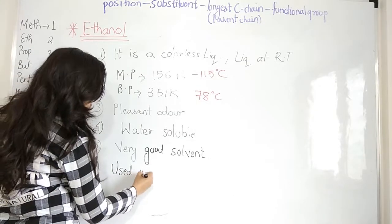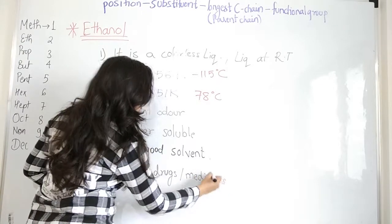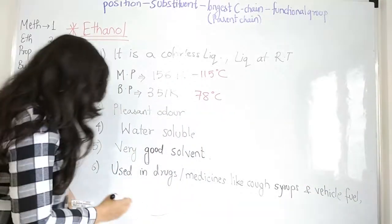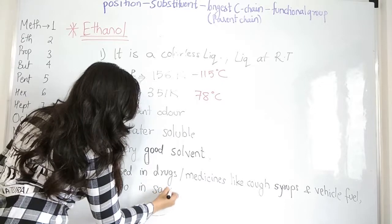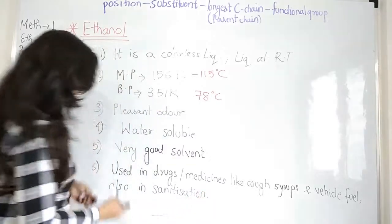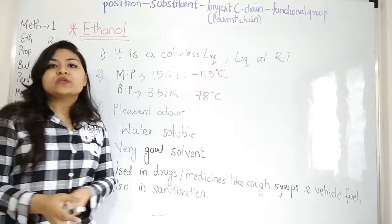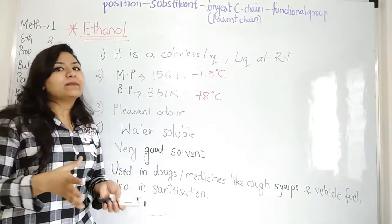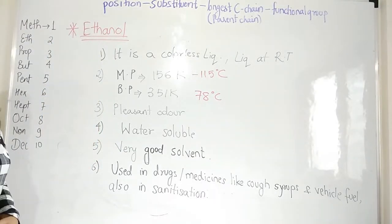It is used in medicines, drugs or medicines like cough syrups, and fuel also for sanitization. Sanitizers has nothing but alcohol which is nothing but this ethanol. Why are they using ethanol? Because it has the property to kill all the germs with the heat of that rubbing, and it gets evaporated also faster. So these are the physical properties of ethanol. Now we will talk about its chemical properties.